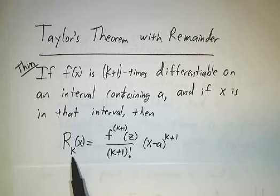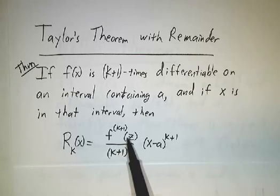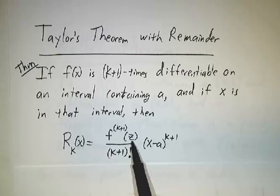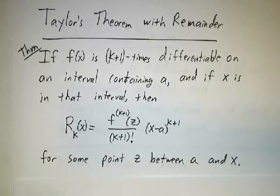after you subtract off the first k terms, looks just like the k plus first term, except that instead of taking the k plus first derivative at a, you take the k plus first derivative at a mystery point, at some point z that is between a and x. The theorem doesn't tell you where the point is. It just says there is a point between z and x where this works.